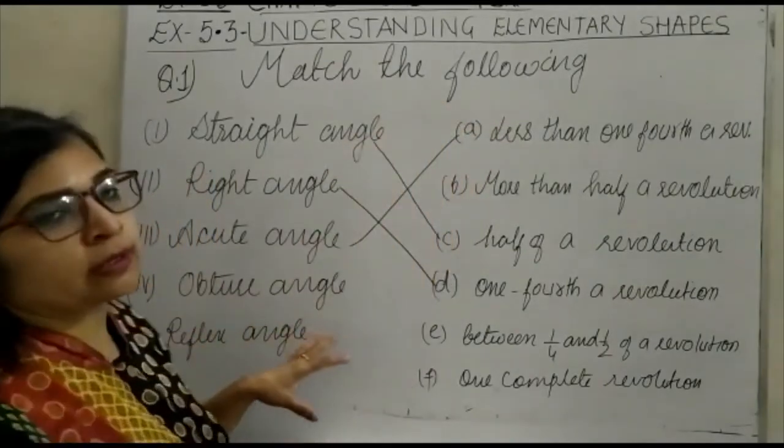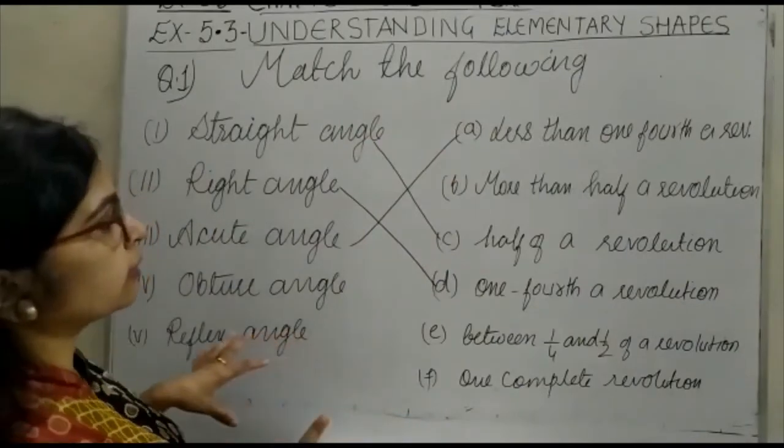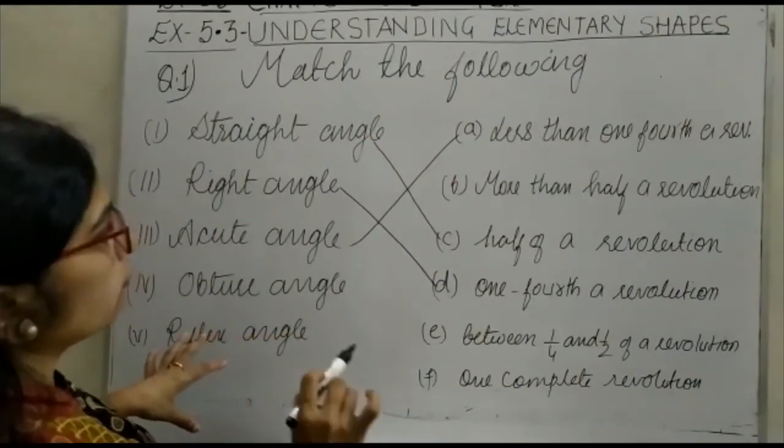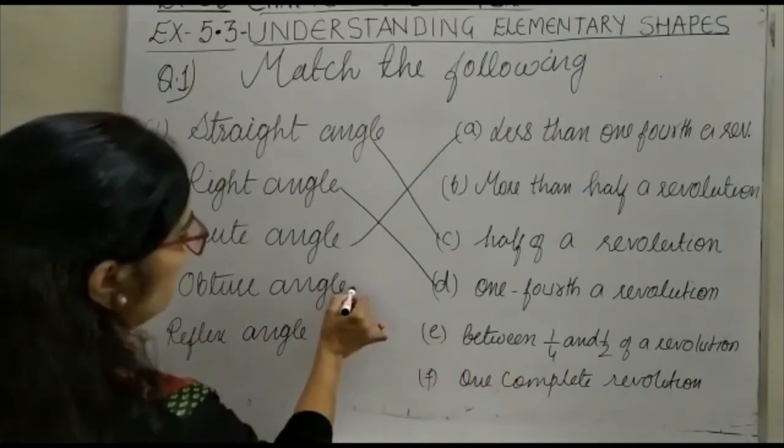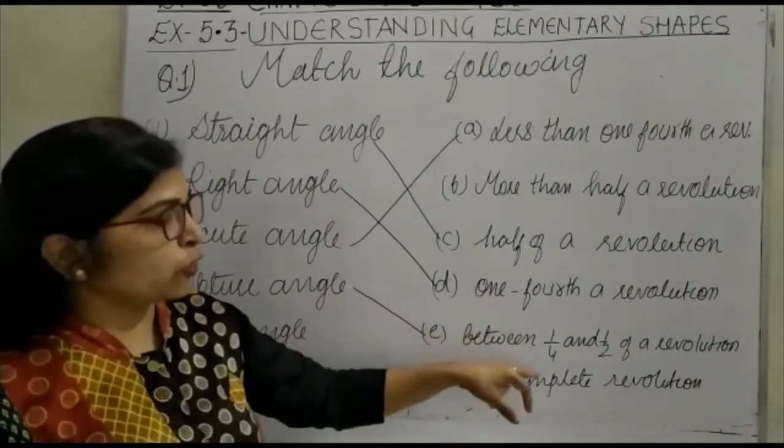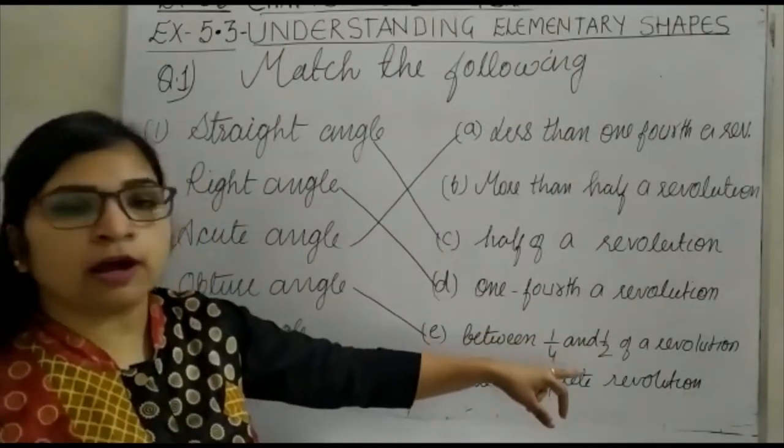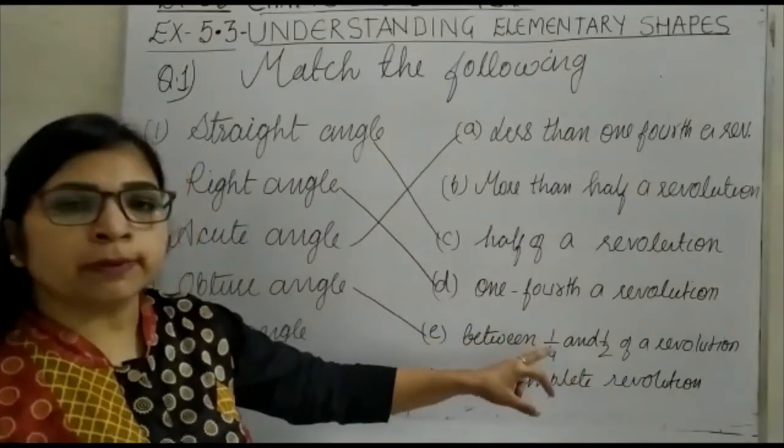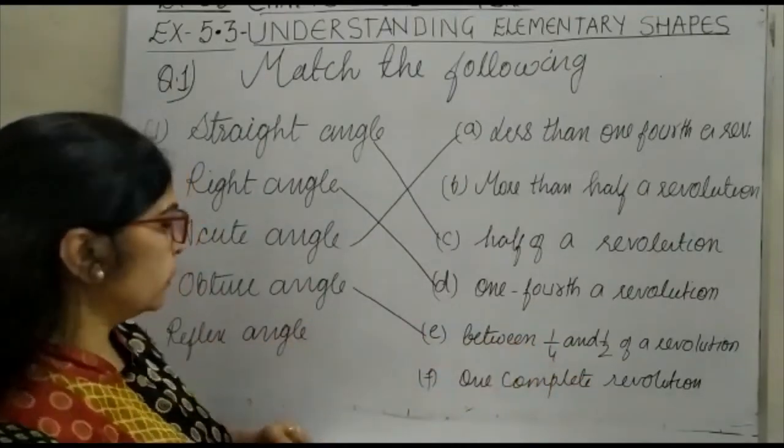Now comes obtuse angle. Obtuse angle is greater than 90 but less than 180. In that case, it will be between one fourth and half of a revolution. One fourth is 90 degrees and half is 180. That means greater than 90 but less than 180, so the option is E.